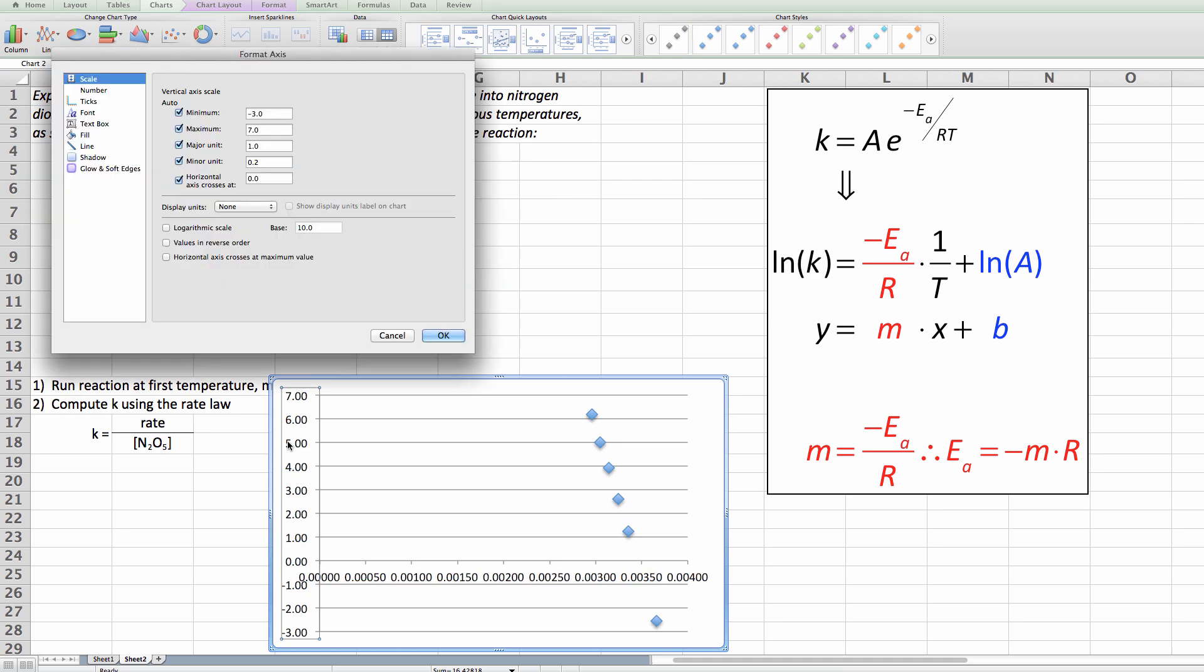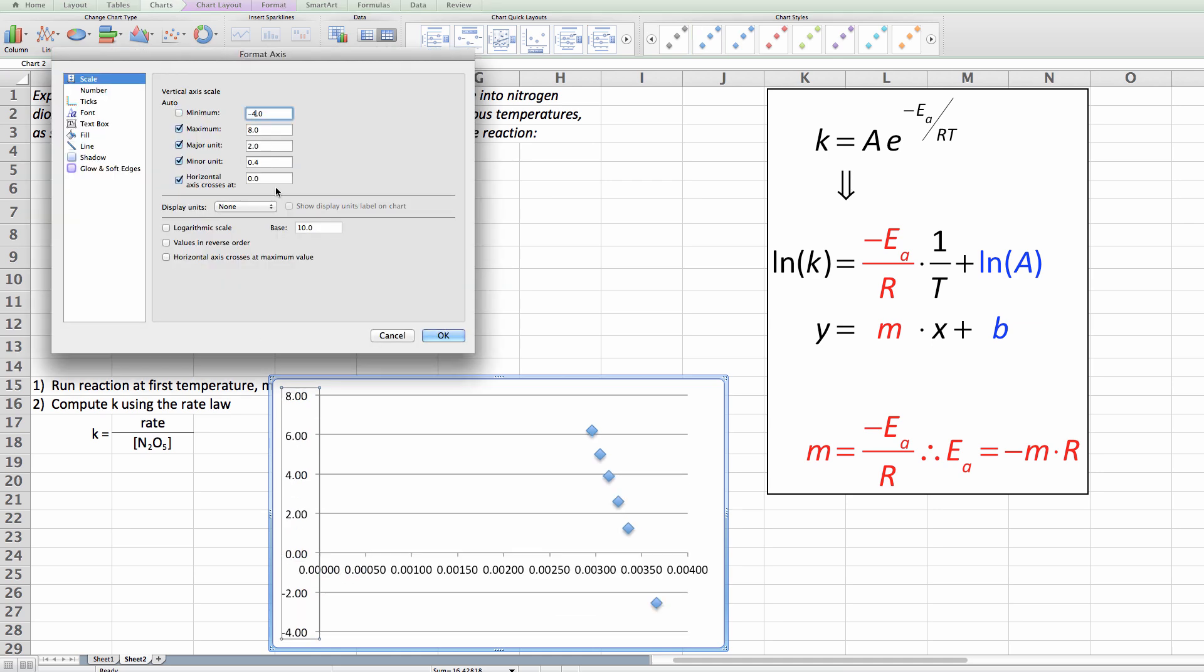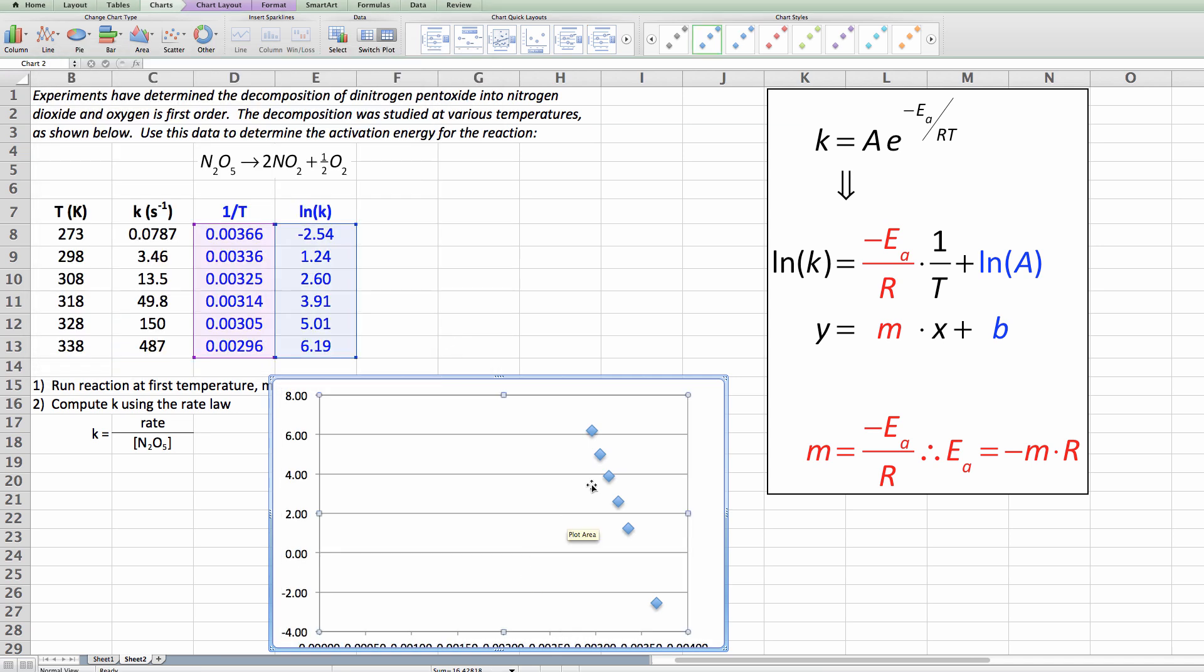So what I'm going to do is I'm gonna double click and I'm gonna make my minimum value here minus four. All right so that I make sure that my range is covering all the data points that I have. And that means I'm going to then put my horizontal crosses also at minus four and when I do that my graph becomes nice, much better looking.